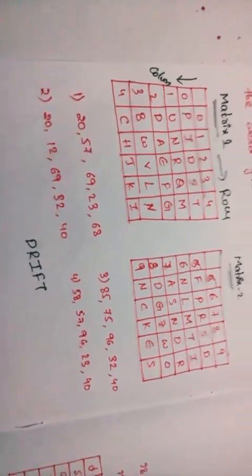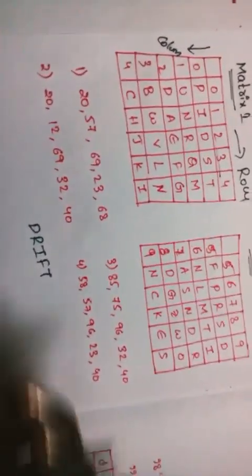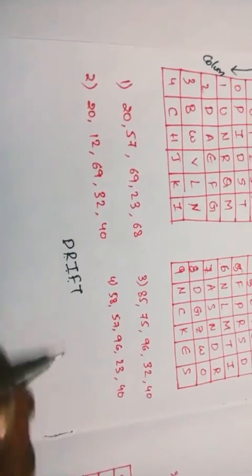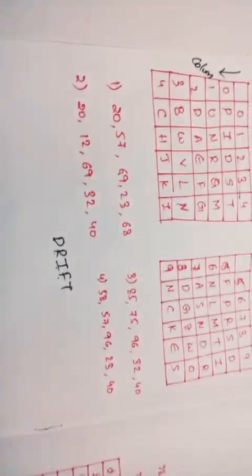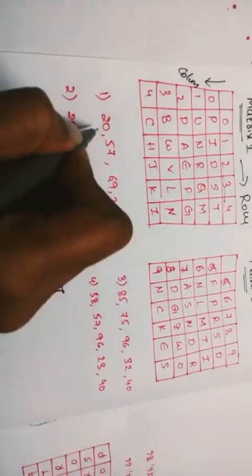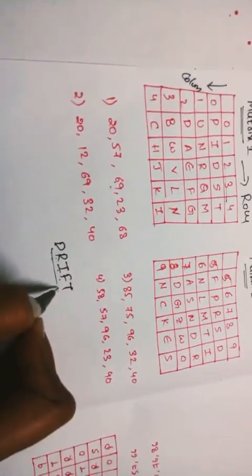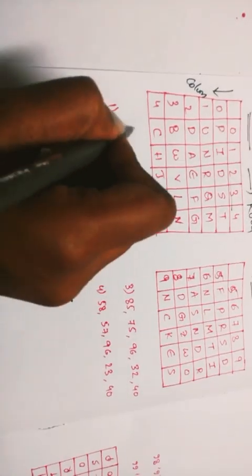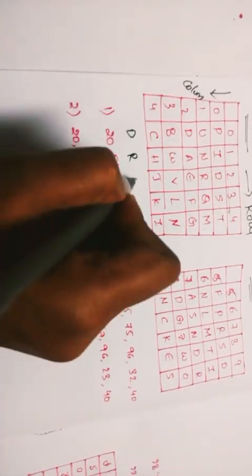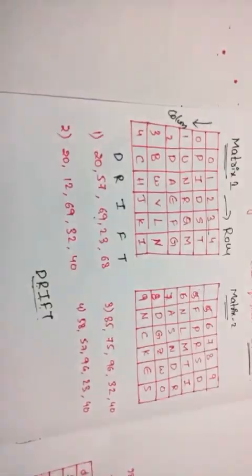To find the code for 'DRIFT', we look at each option. The word has five letters, so there are five numbers in the code. We verify that each and every number satisfies each and every letter: D is satisfied, R is satisfied at 5,7; I at 6,8 or 6,9; F satisfied; and T satisfied. Each letter must be satisfied.